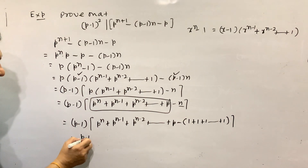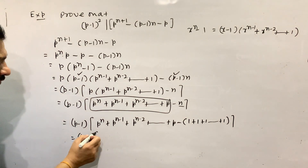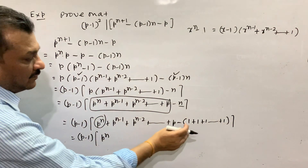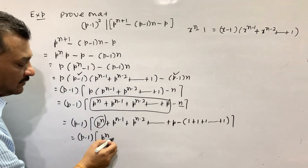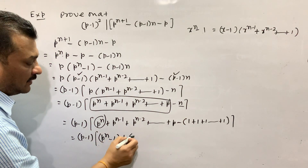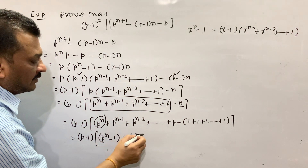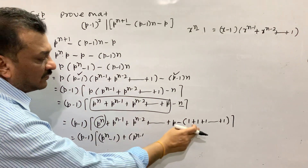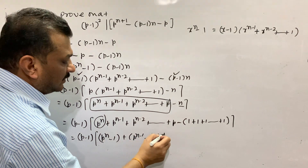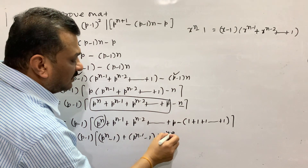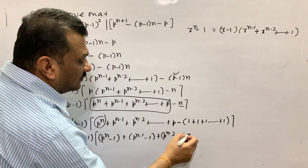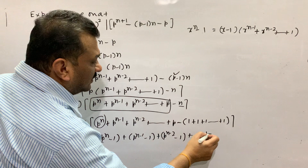Carrying more: p to the power n minus 1, next p to the power n minus 1, minus 1, p to the power n minus 2, minus 1, and p continuing the pattern.